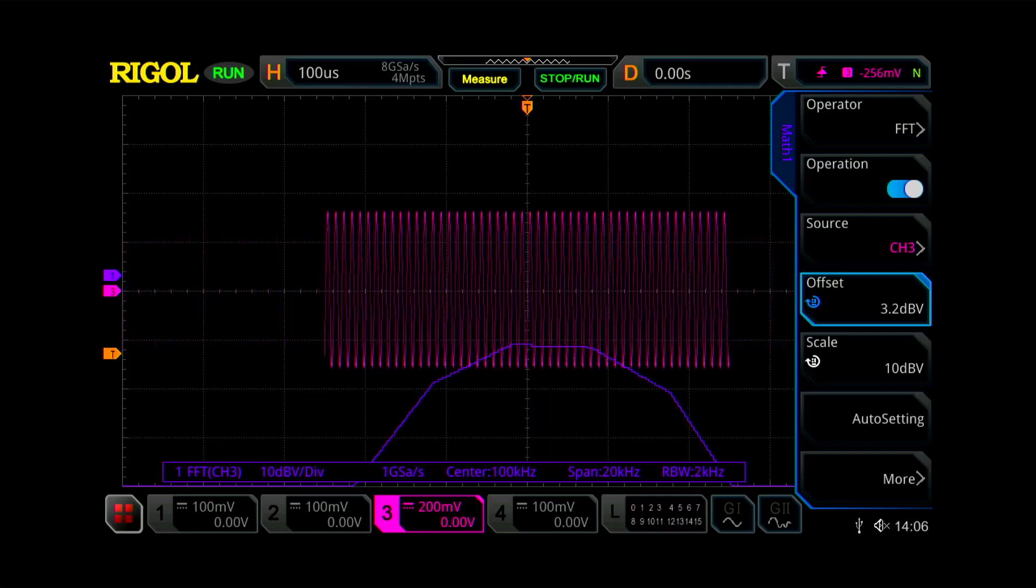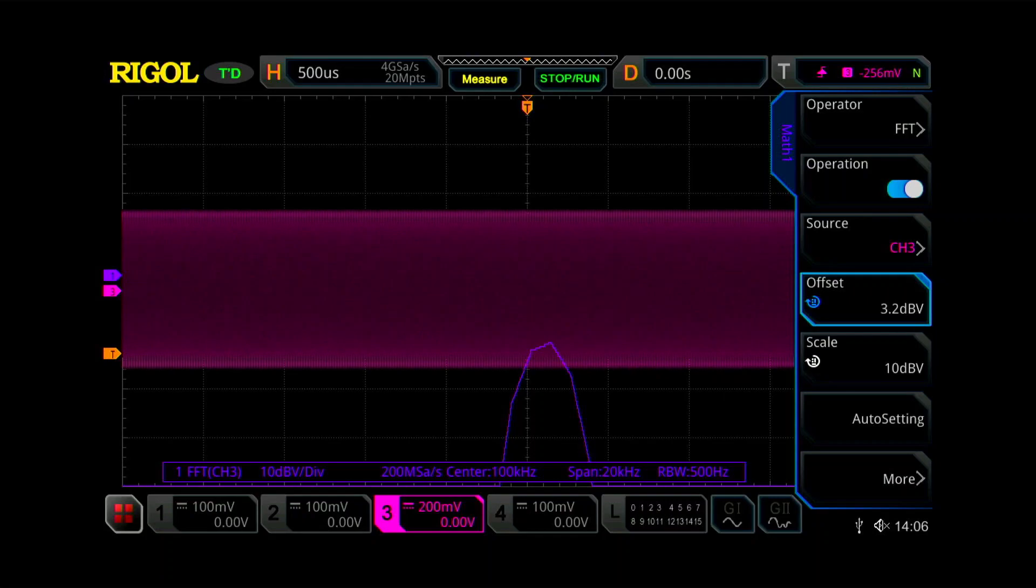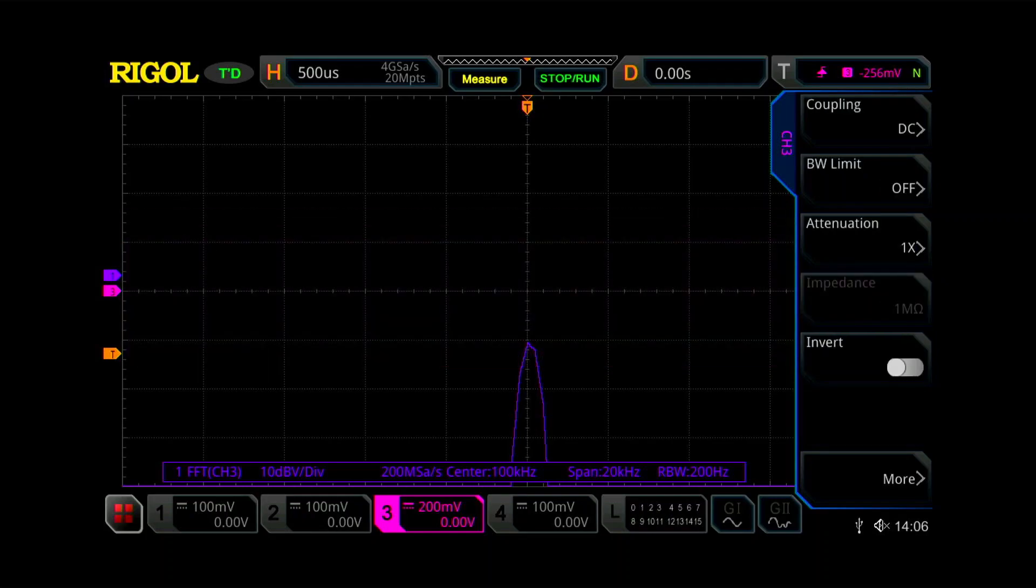And that allows more points of information. And you can see every time I change the horizontal sweep, the resolution bandwidth goes down. So we've been down here to now to 200 Hertz resolution bandwidth. That's great. And we can start to see a little peak there. So I'm going to turn off channel three because we don't need that any longer.